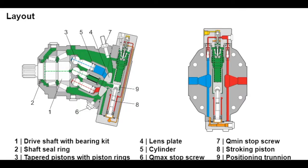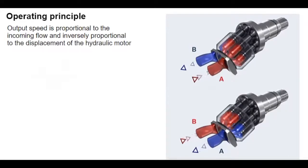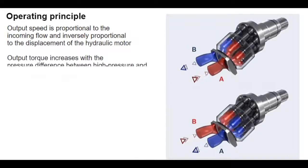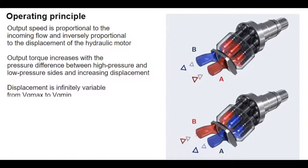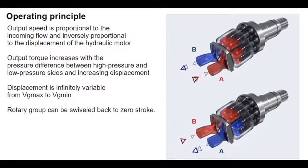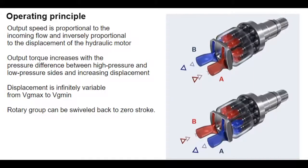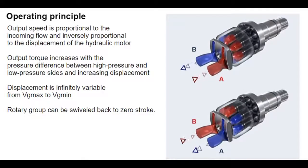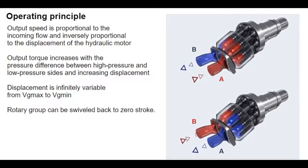Two-point control (HZ, EZ) makes the swivel angle switchable from maximum to minimum. The cylinder bores are supplied with hydraulic fluid through the port plate and lens plate. The pistons in the cylinder bores perform a stroke, which is converted into rotation at the driveshaft. The pistons also catch the cylinder and generate output torque at the driveshaft. Output torque increases with the pressure difference between the high-pressure and low-pressure sides. The output speed is proportional to the inward flow and inversely proportional to the displacement of the hydraulic motor.